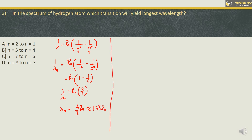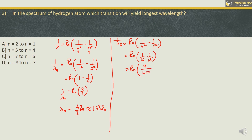Let us check out option B, transition 5→4. 1/λB = Rh × (1/4² − 1/5²) = Rh × (1/16 − 1/25). Cross-multiplying: 25 − 16 = 9 in the numerator, and 25 × 16 = 400 in the denominator. So 1/λB = 9Rh/400, giving λB = 400/(9 Rh), which is approximately 44/Rh.